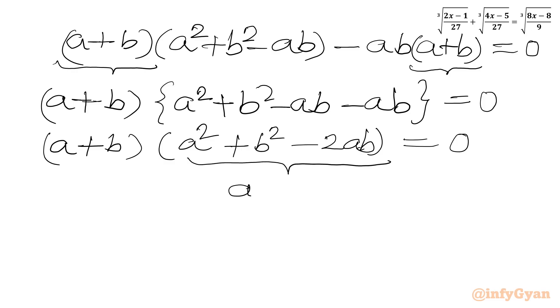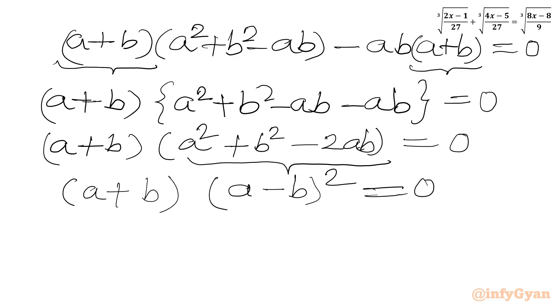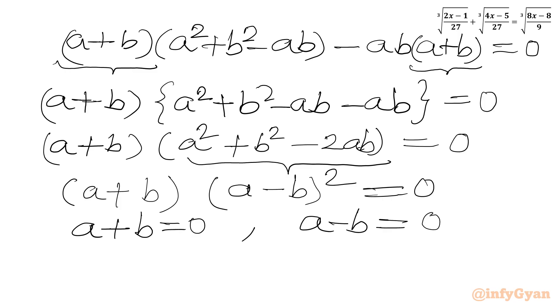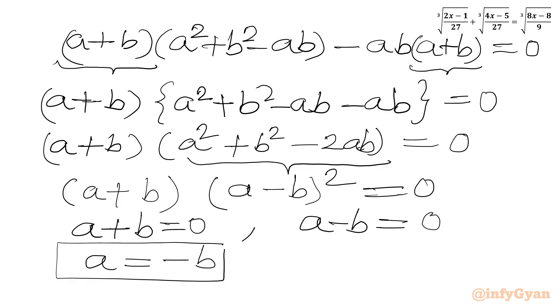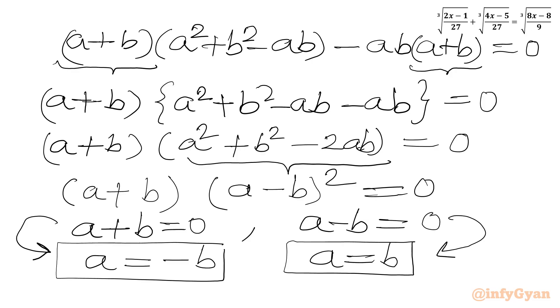So we can write (a + b)(a − b)² equals 0, which is another identity. This gives us two cases: a + b = 0, so a = −b; and (a − b)² = 0, so a = b.